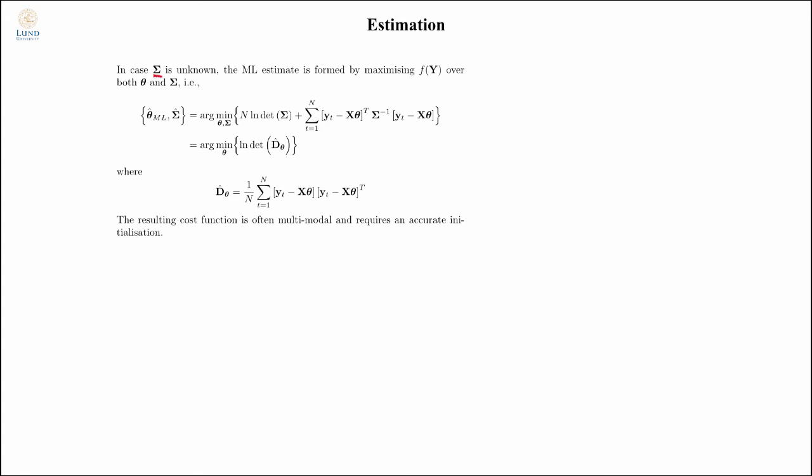Moving on to the case when sigma is unknown, I'm no longer able to omit the unknown covariance matrix, and I need to minimize over both the unknown parameters and the unknown covariance matrix. The easiest way of doing this is that you compute the matrix derivatives of this cost function. I refer you to the book for the details of how to do that, but they are basically lookup forms that you can use. So the maximum likelihood estimate is saying that you should minimize the log of the determinant, that is a volume measure in some sense, of the estimated covariance matrix.